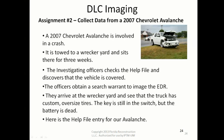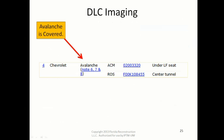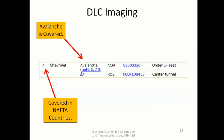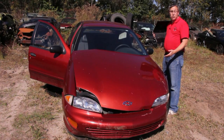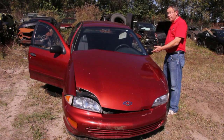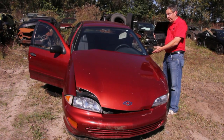Assignment two: collect data from a 2007 Chevrolet Avalanche. We see that the Avalanche is covered, and that it's covered in NAFTA countries. We see that EDR number one is an airbag control module. We want to read the information from the event data recorder in this vehicle today.